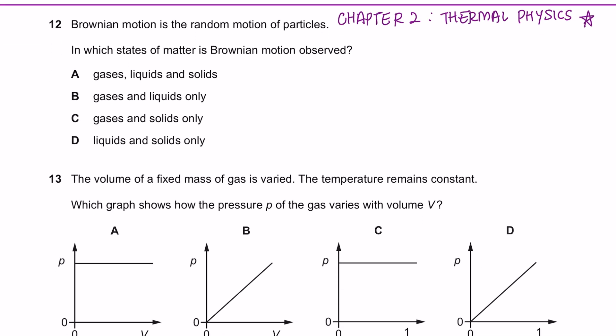From here onwards is questions from Chapter 2, Thermal Physics. Question 12. Brownian motion is the random motion of particles. In which states of matter is Brownian motion observed? Random motion of particles can only occur in gases and liquid. Solid particles are at its fixed position and it only vibrates at its position. So the answer here is B.